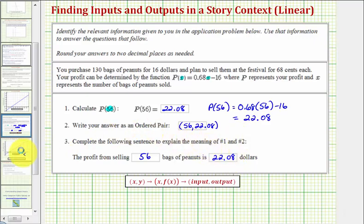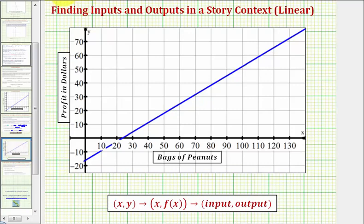Let's also look at this graphically. Here's a graph of our profit function. Notice when the input is 56, this would be the point on our function here. And notice how the function value along the vertical axis at this point we now know is 22.08. Again, the coordinates of this point are (56, 22.08).